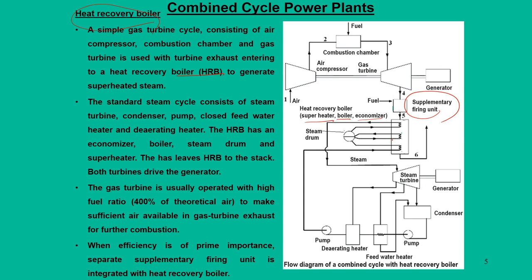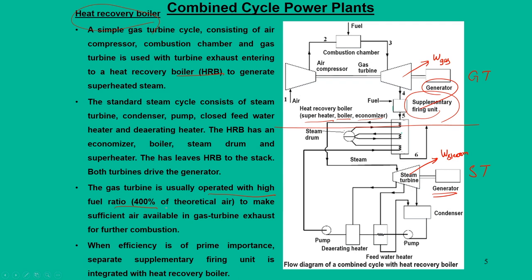The heat recovery boiler unit provides necessary steam to the steam turbine, which then expands and generates power. The gas turbine unit generates W_gas and the steam turbine also gives power W_steam. Combined power can be used for power conversion through the generator. The gas turbine units operate with a very high fuel ratio — 400 percent of theoretical air — and additionally, when efficiency is of prime importance, a separate supplementary firing unit is integrated with the heat recovery boiler. These two units are essential for a combined cycle mode of operation.